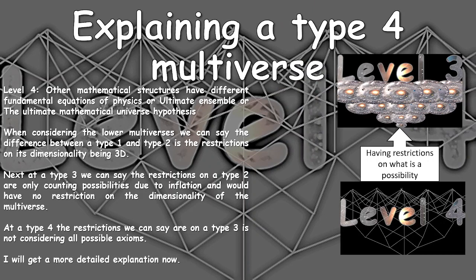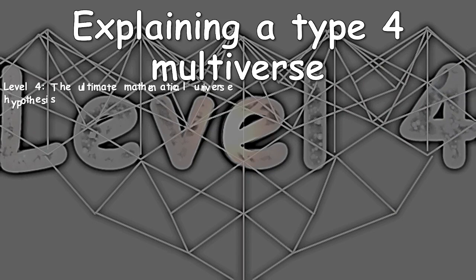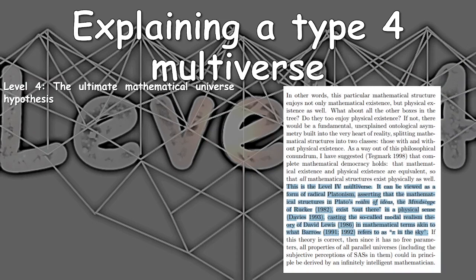I'll be doing a more detailed and formal explanation based on the papers of Mark Tegmark. This is something said in Tegmark's paper — read out to make sure all words are said correctly. The Level 4 multiverse can be viewed as a form of radical Platonism, asserting that the mathematical structures in Plato's realm of ideas — the Mindscape of Rucker, 1982 — exist out there in a physical sense (Davies, 1993), casting the so-called modal realism theory of David Lewis, 1986, in mathematical terms akin to what Barrow, 1991–1992, refers to as 'pi in the sky.'